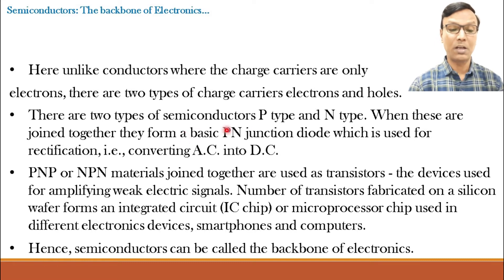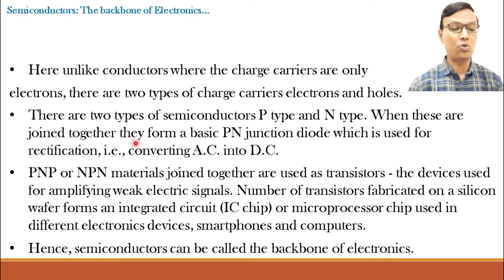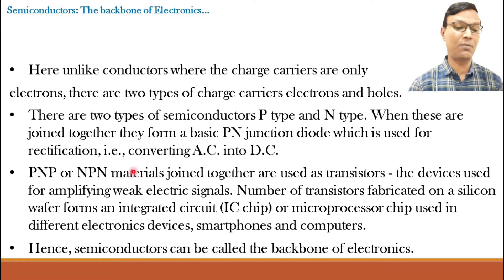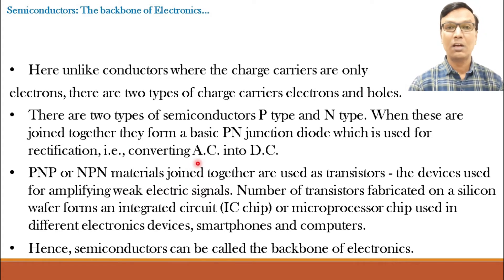There are two types of semiconductors: P type semiconductor and N type semiconductor. When these two are joined, they form a basic PN junction diode which is used for rectification, that is converting AC into DC, and today the majority of our electronic devices are working on DC.